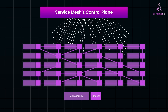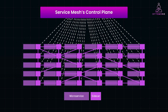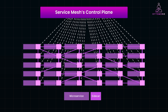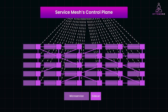A service mesh is an infrastructure layer that handles service-to-service communication. It's essentially a network of proxies called sidecars that manage traffic between microservices. But unlike traditional networking, a service mesh operates at the application layer.